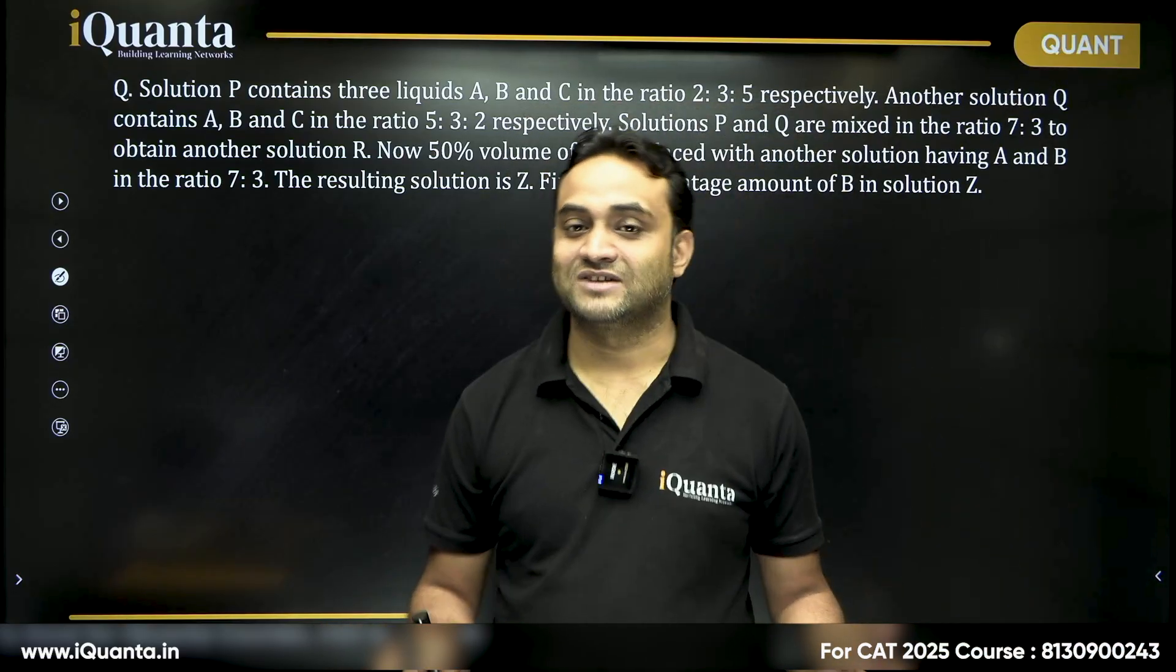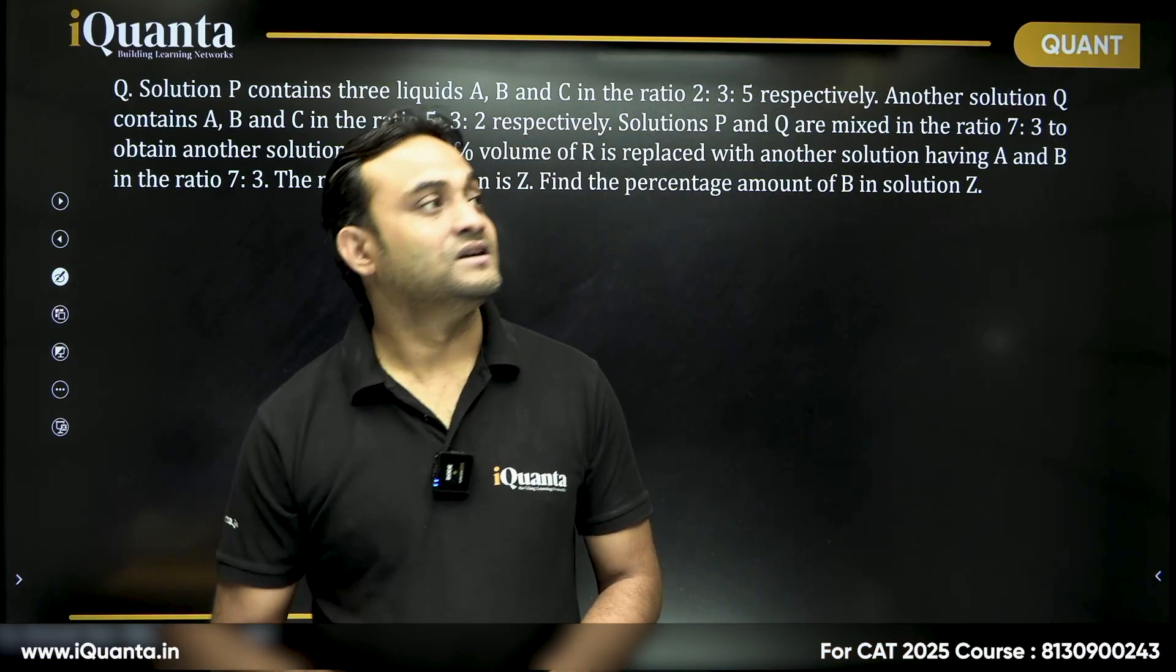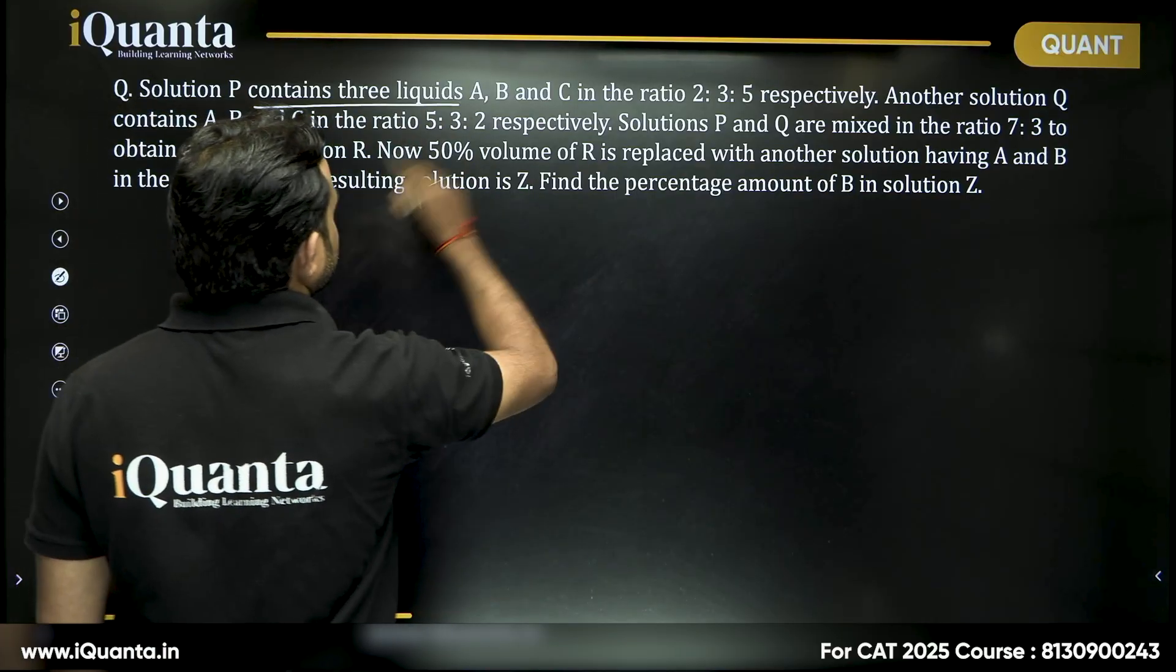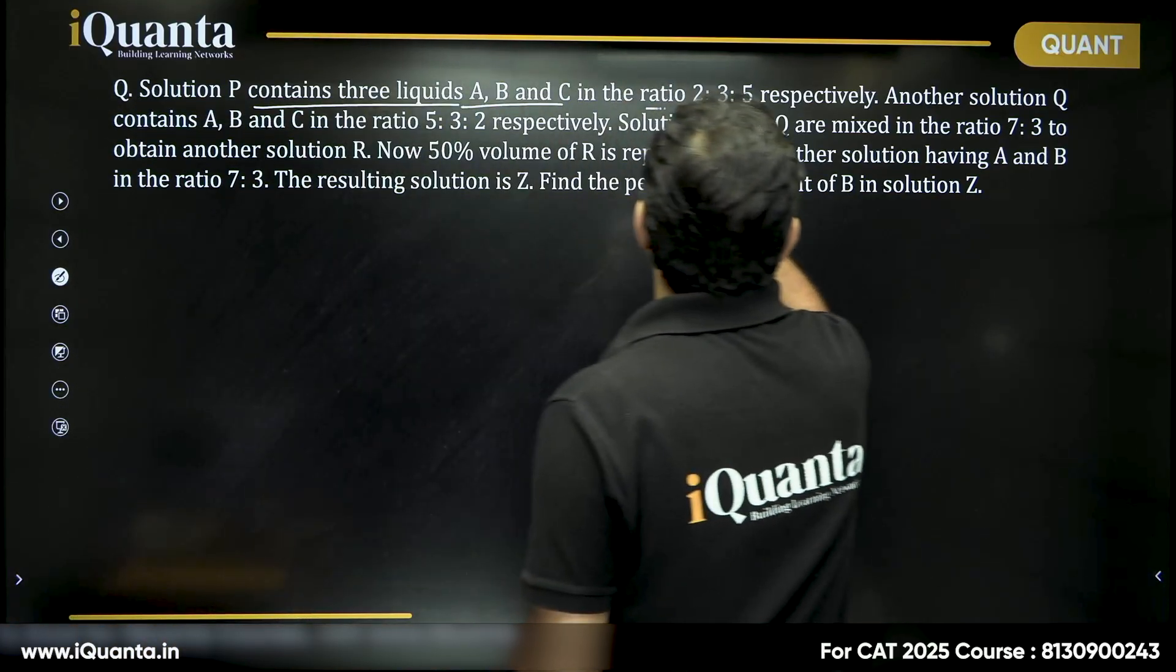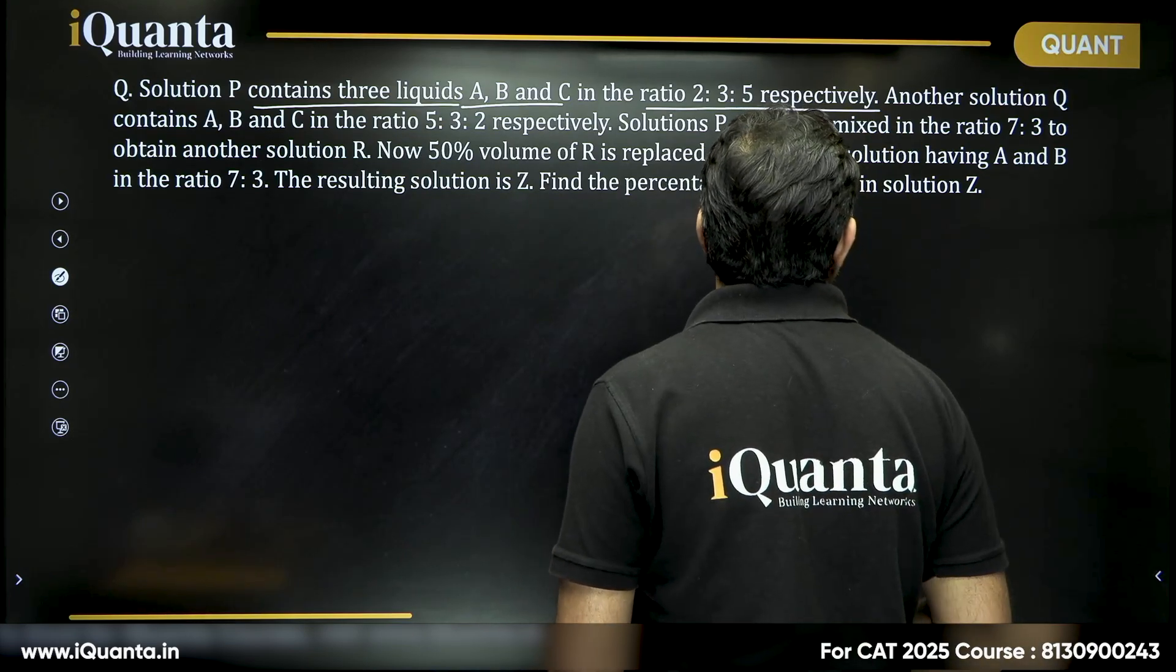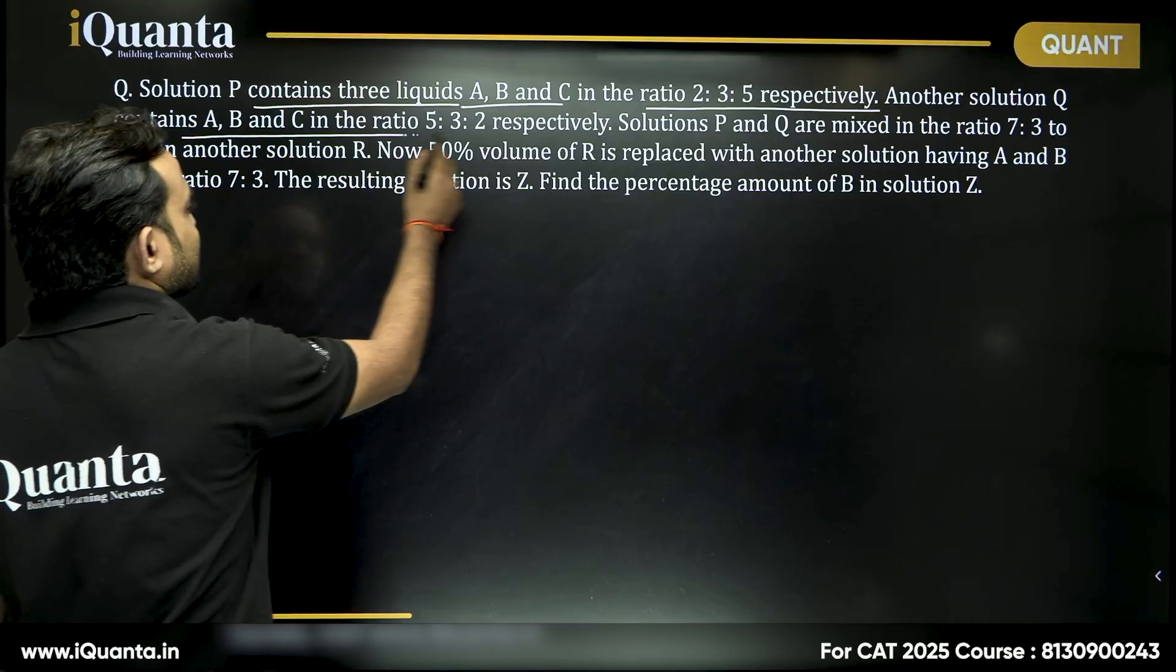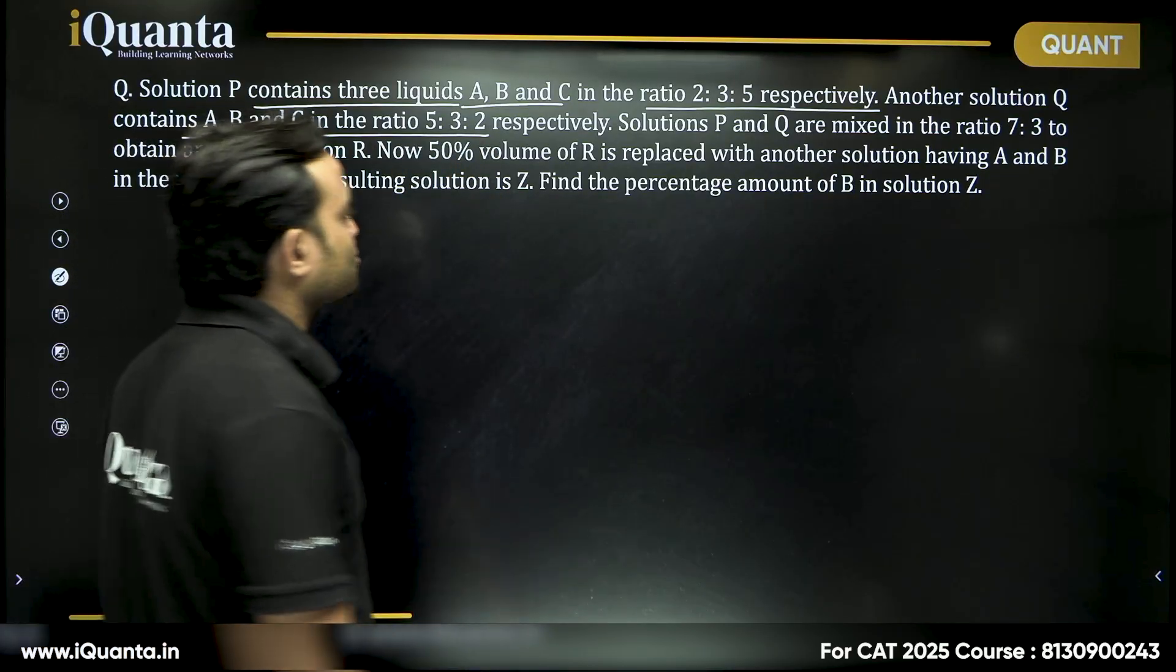Okay, so let us solve this. It says solution P contains three liquids A, B and C in the ratio 2 to 3 to 5 respectively. Another solution Q contains A, B and C in the ratio 5 to 3 to 2 respectively.